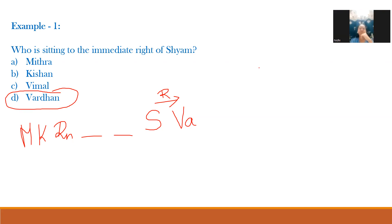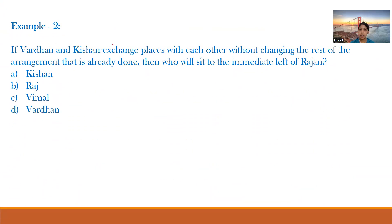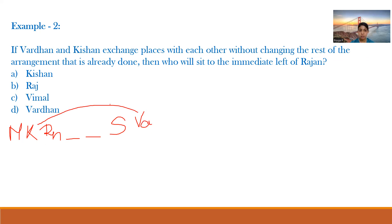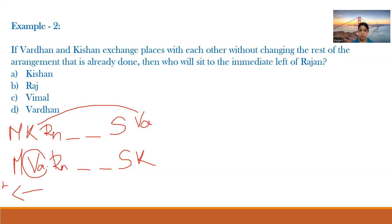Sub-question 2: If Vardhan and Kishan exchange places without changing the rest of the arrangement, who will sit to the immediate left of Rajan? After the swap: Mitra, Vardhan, Rajan, [blank], [blank], Sham, Kishan. The immediate left of Rajan is Vardhan. The answer is option D: Vardhan.